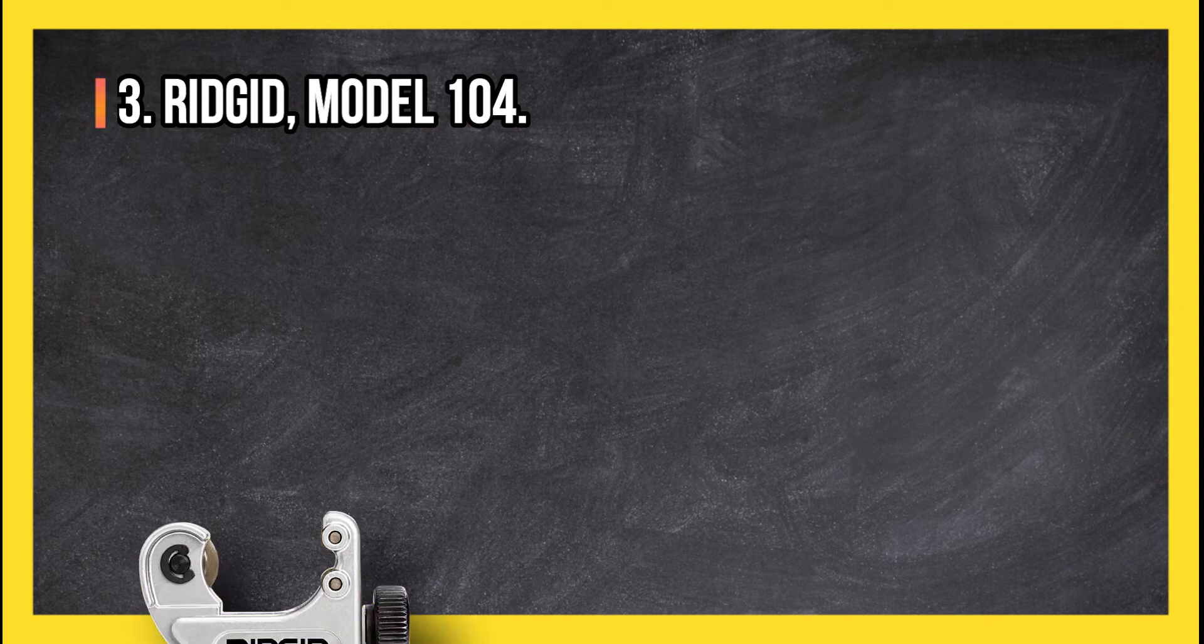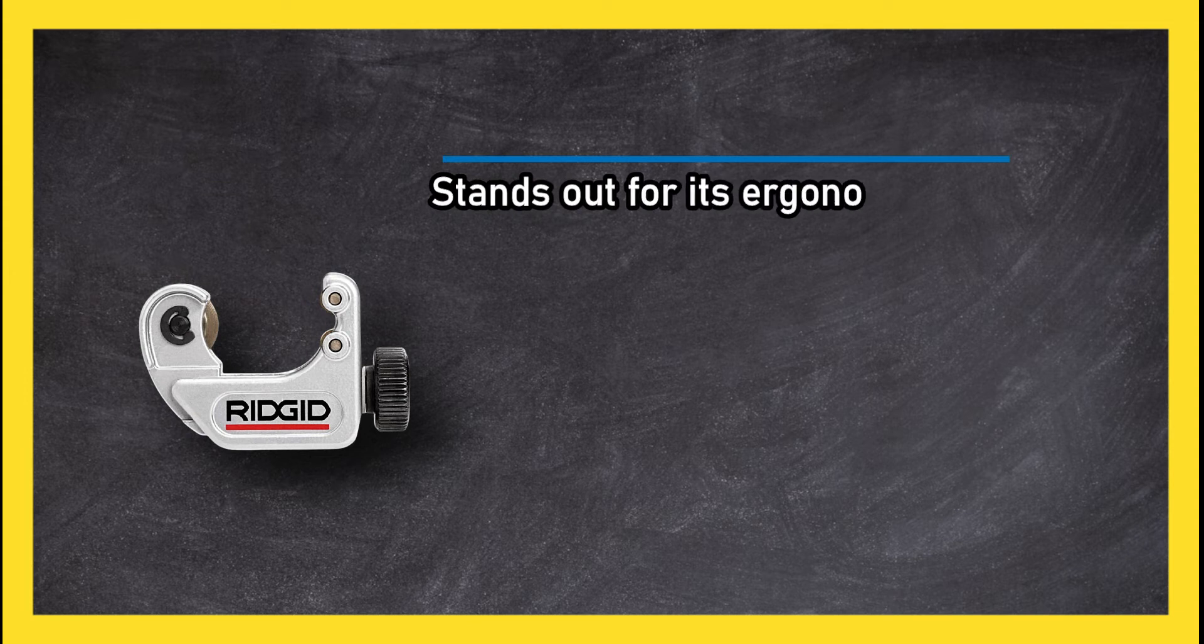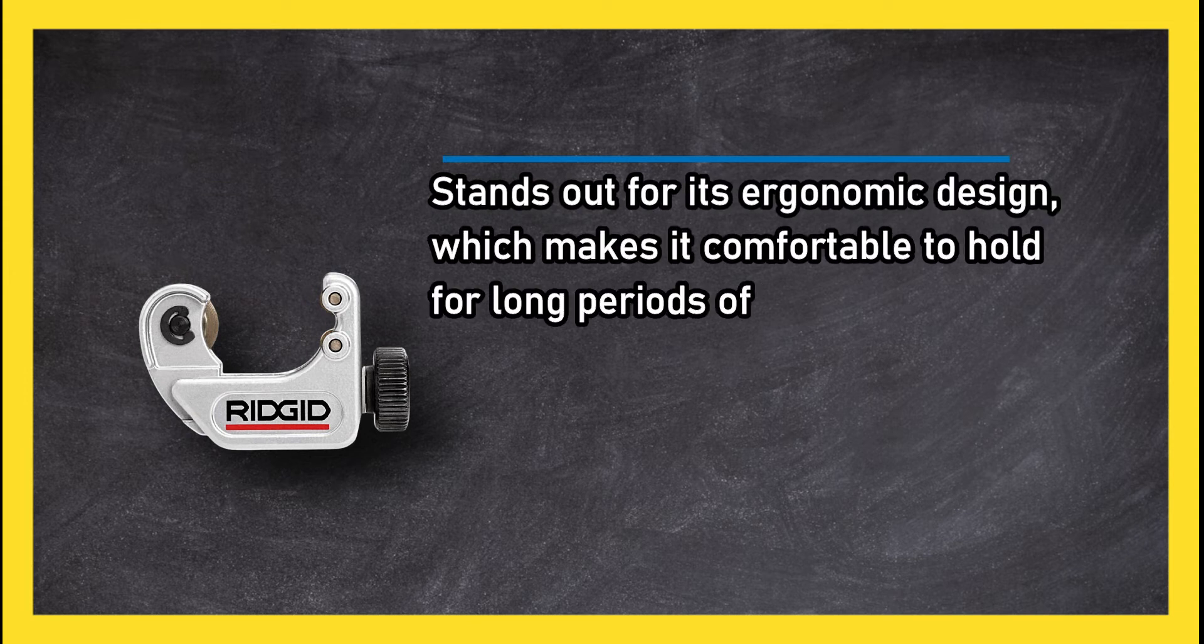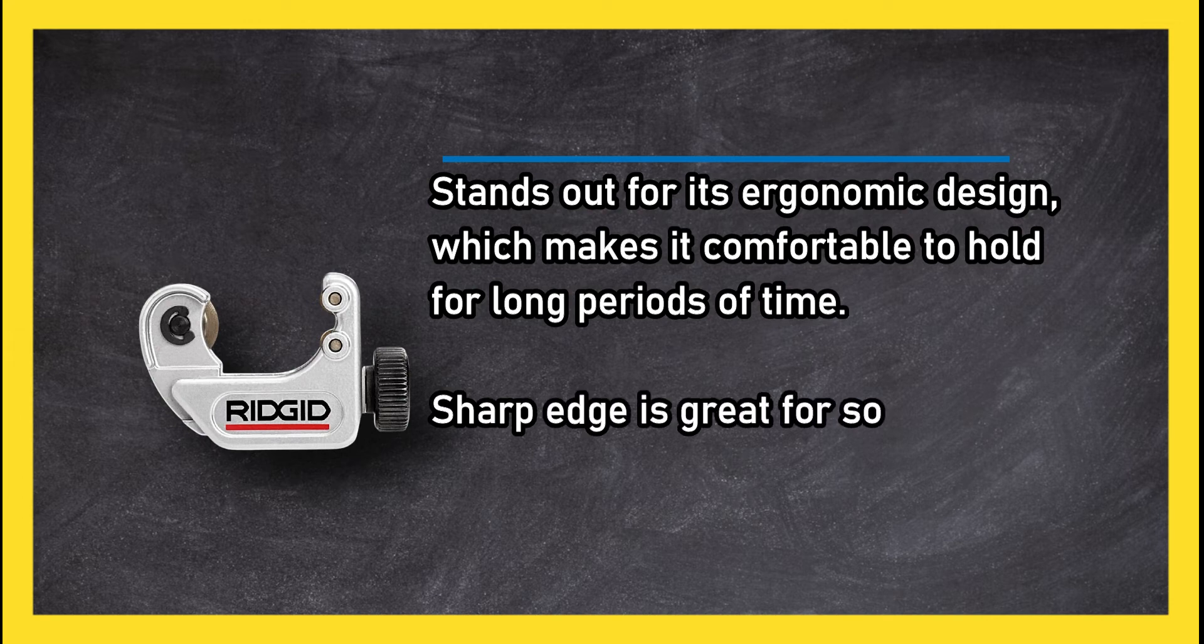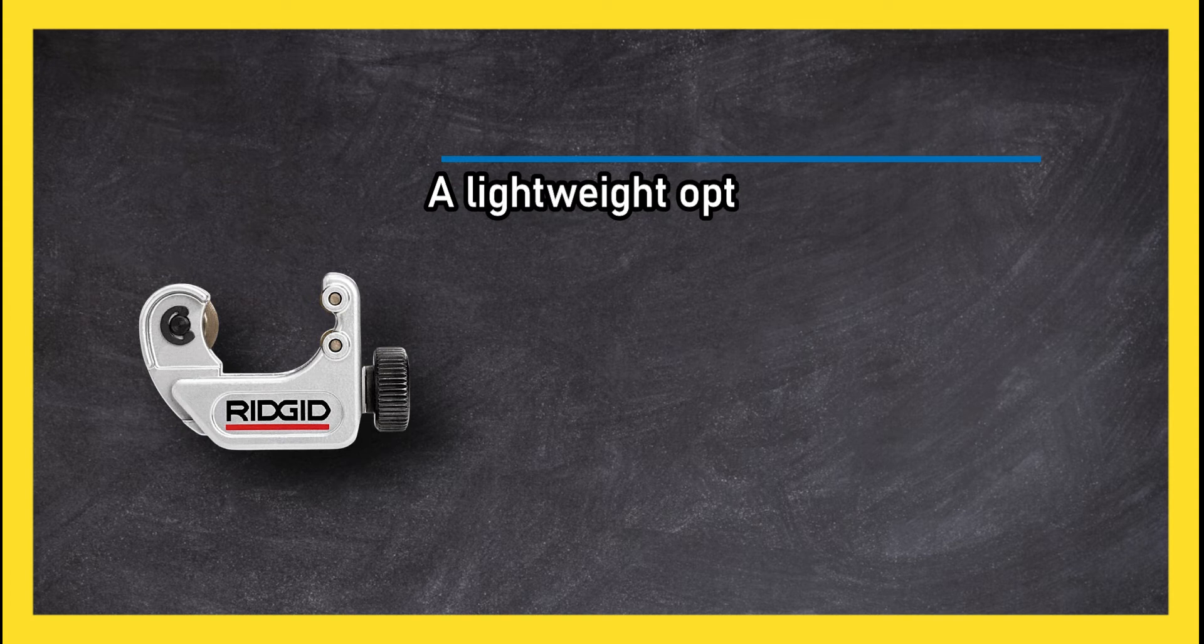At number three, Rigid Model 104 stands out for its ergonomic design which makes it comfortable to hold for long periods of time. Sharp edge is great for softer tubing. A lightweight option for flexible tube cutting made of PEX plastic, not designed for metal tube or pipe cutting.